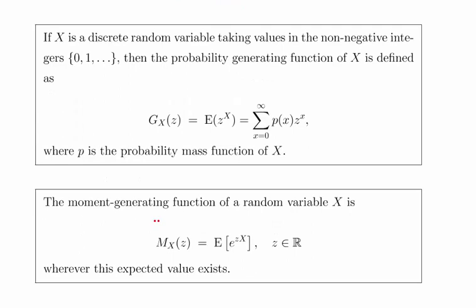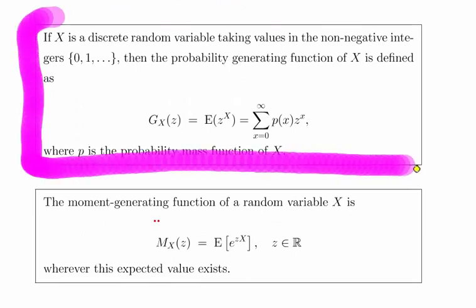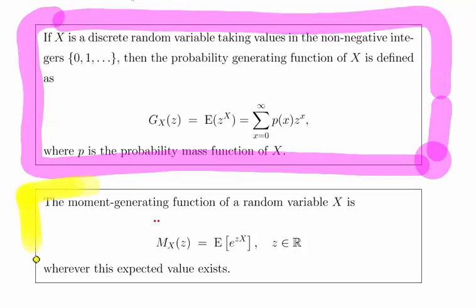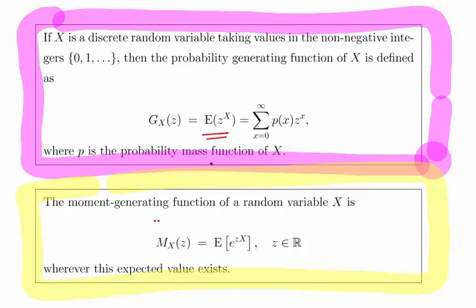So there are two key definitions for both parts of the question. The first part is the probability generating function, and below we have the moment generating function. Essentially what we have to do here is treat it as a discrete random variable — it is the expected value of z to the power of x, or working in terms of t, the expected value of t to the power of x.